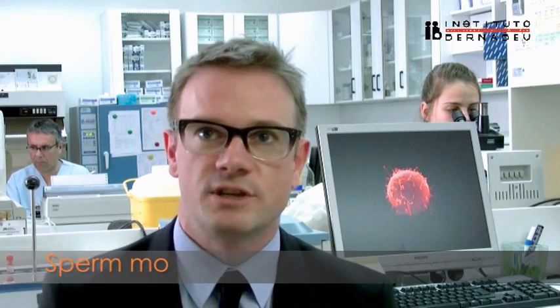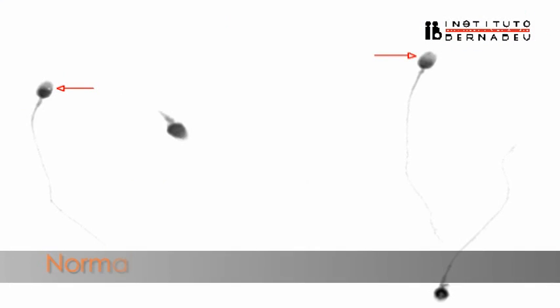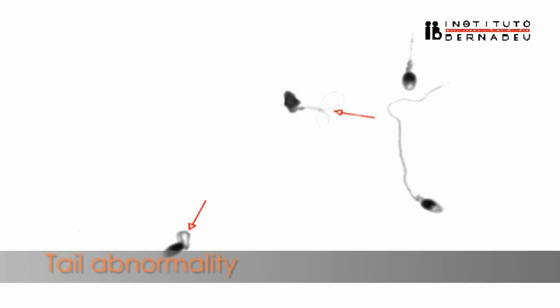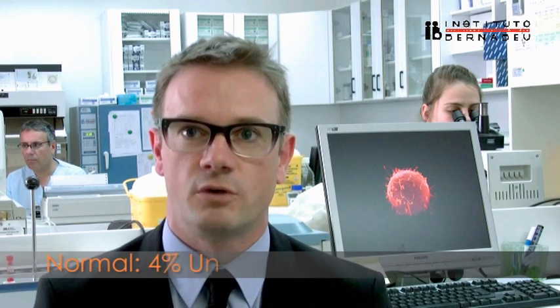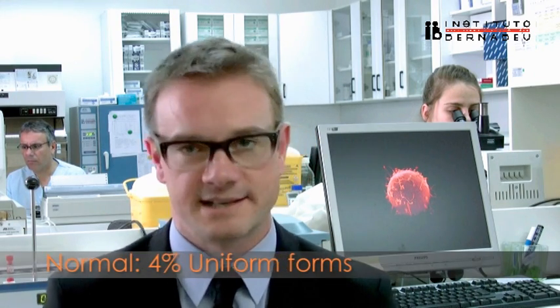As for sperm morphology, we can observe both normal sperm as well as sperm with abnormalities, either at the head or tail. A sperm sample is considered normal if we find at least 4% of normal forms, as per the strict Kruger criteria.